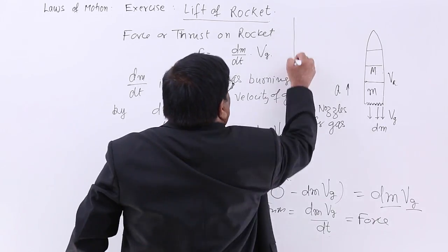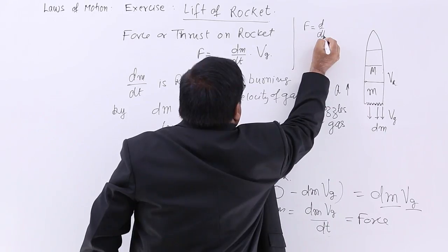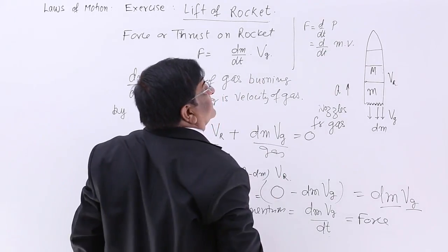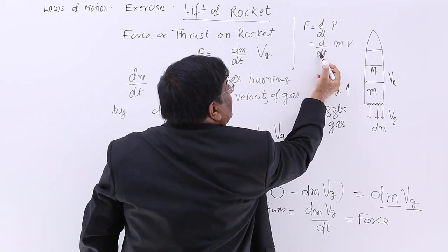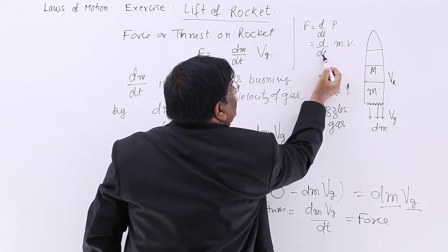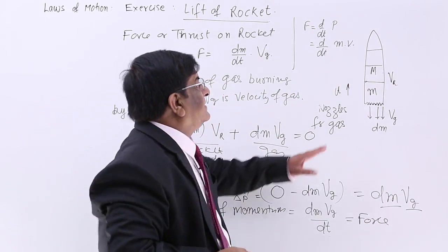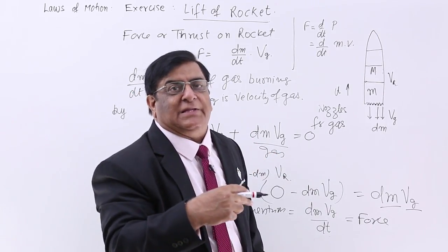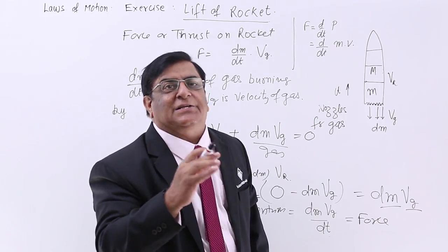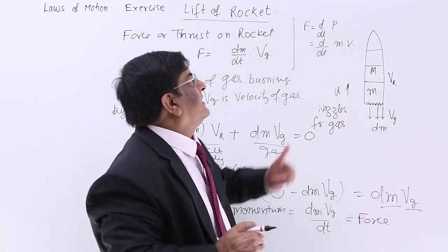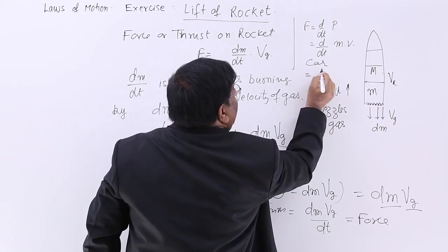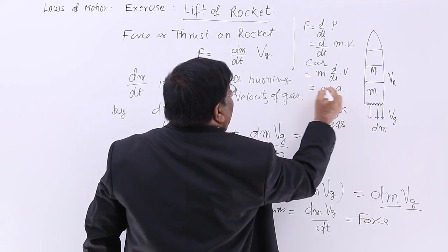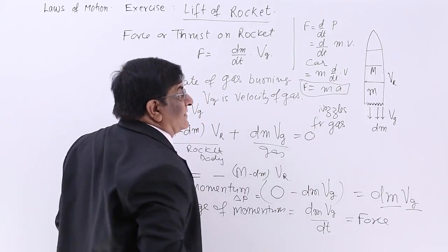One thing I want to bring to your notice: what we have studied in second law, that force is rate of change of momentum, and momentum is m into v. Whose differentiation is to be done? Is it rate of change of mass or rate of change of velocity? The answer is it changes from situation to situation. When a car is moving, it accelerates and its mass does not change. So here mass is constant. So in case of car, we take M as constant and d/dt of v, which gives us M into a, force.